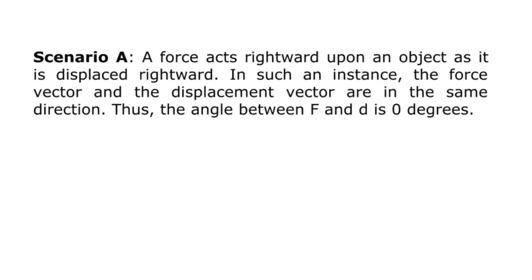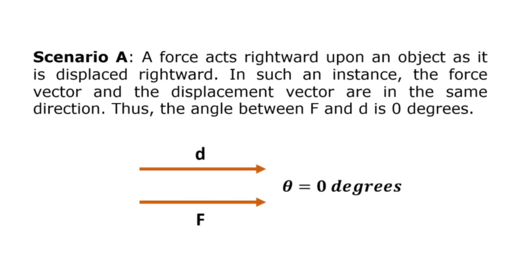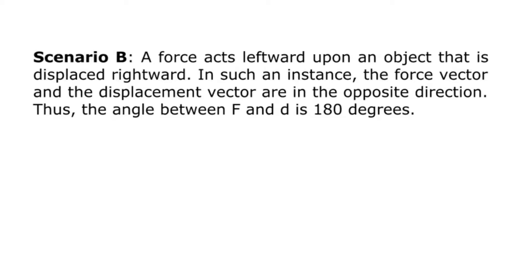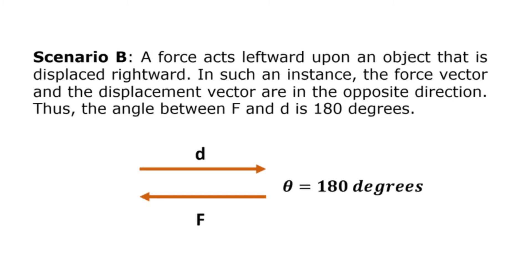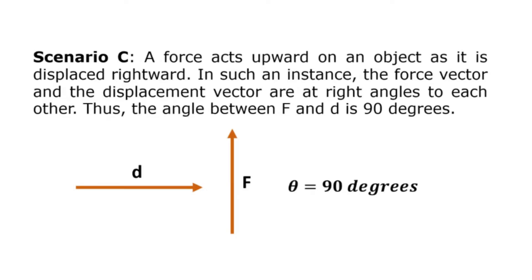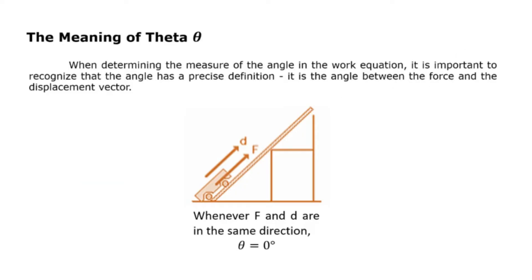Scenario A: A force acts rightward upon an object as it is displaced rightward. In such an instance, the force vector and the displacement vector are in the same direction, thus the angle between F and d is zero degrees. Scenario B: A force acts leftward upon an object that is displaced rightward. In such an instance, the force vector and the displacement vector are in the opposite direction, thus the angle between F and d is 180 degrees. Scenario C: A force acts upward on an object as it is displaced rightward. In such an instance, the force vector and the displacement vector are at right angles to each other, thus the angle between F and d is 90 degrees.